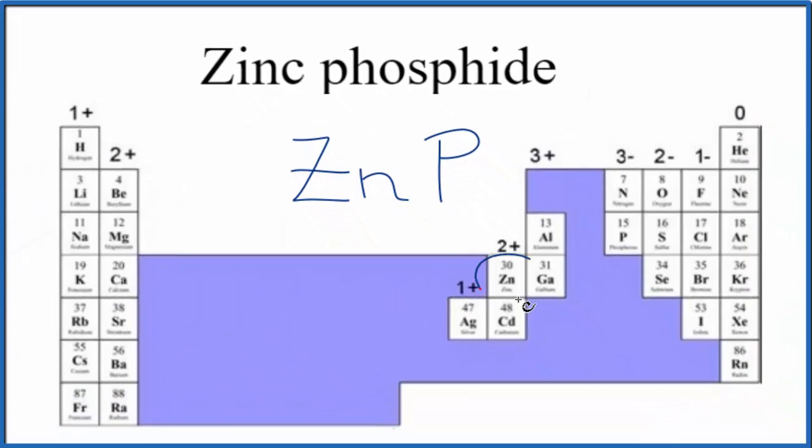So zinc is kind of special. It's in with these transition metals, but zinc is always going to be 2+. Phosphorus, group 13, sometimes called 3A, right below nitrogen, it's going to be 3-, so we have the ionic charge for each of these elements in zinc phosphide.